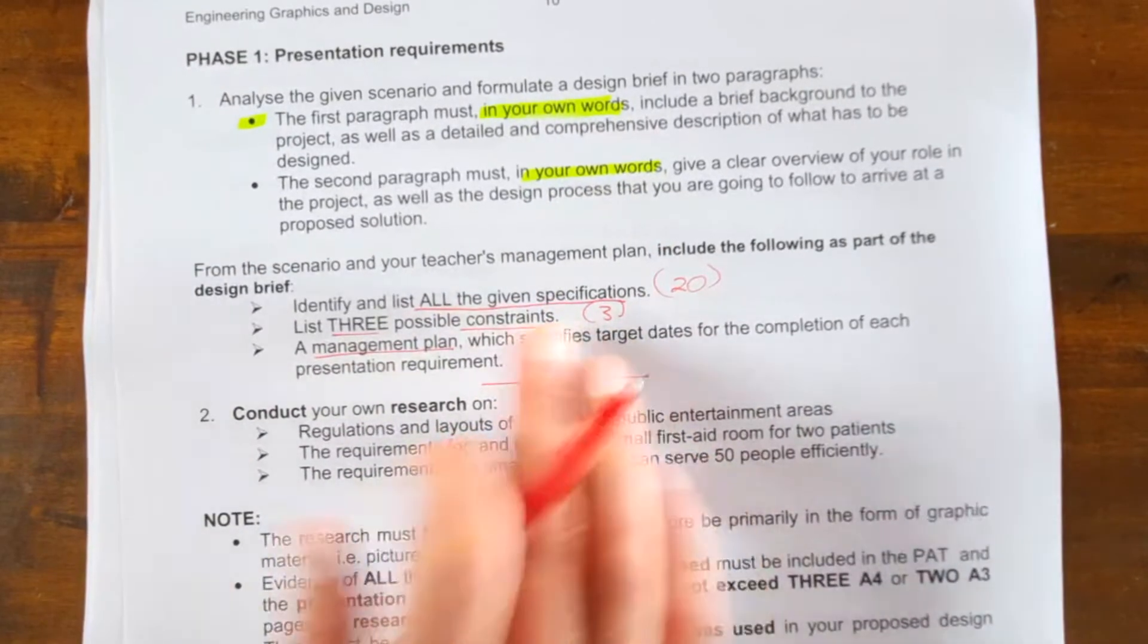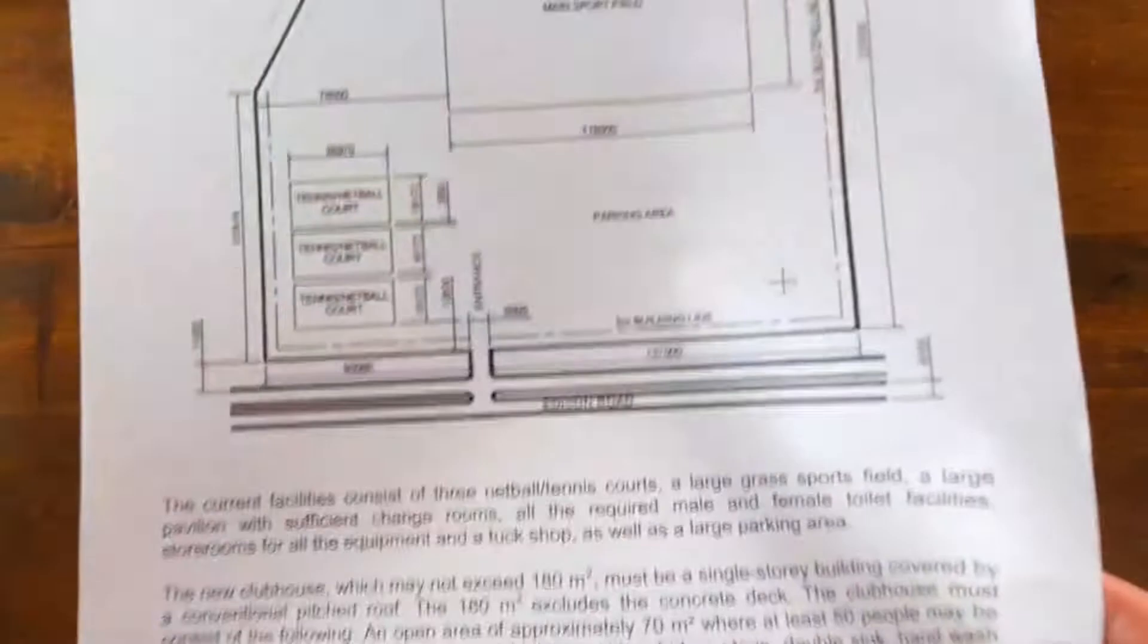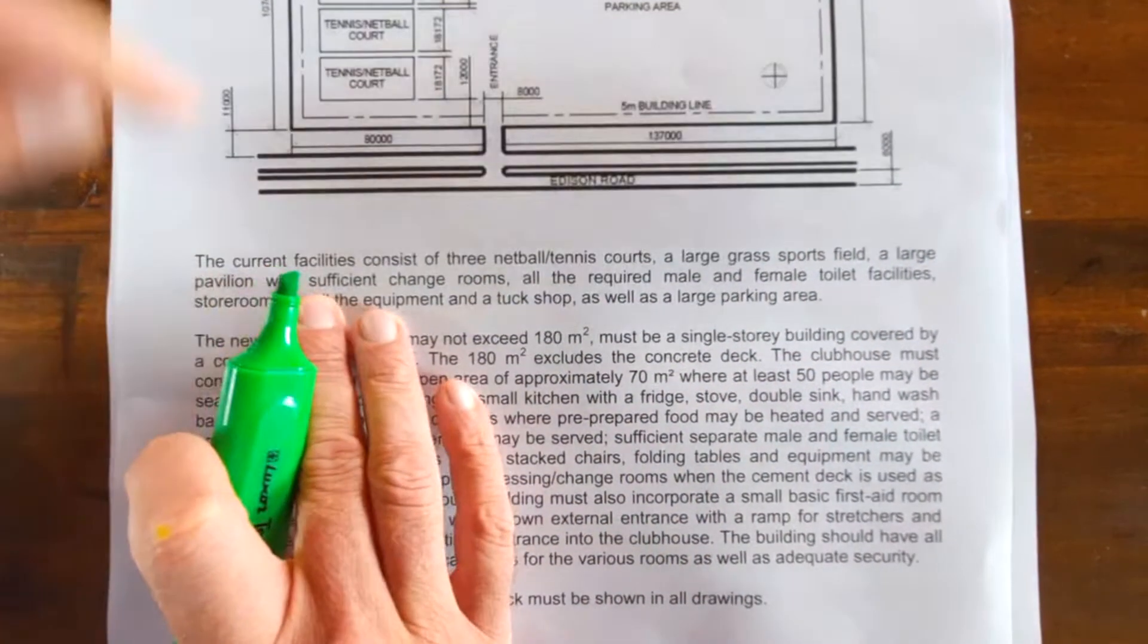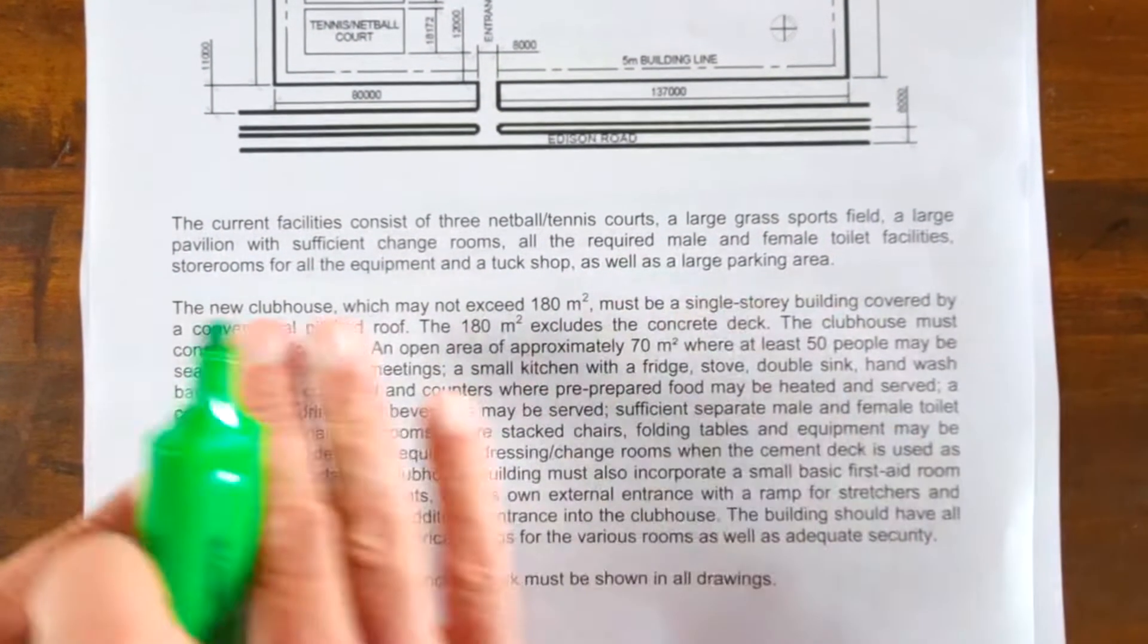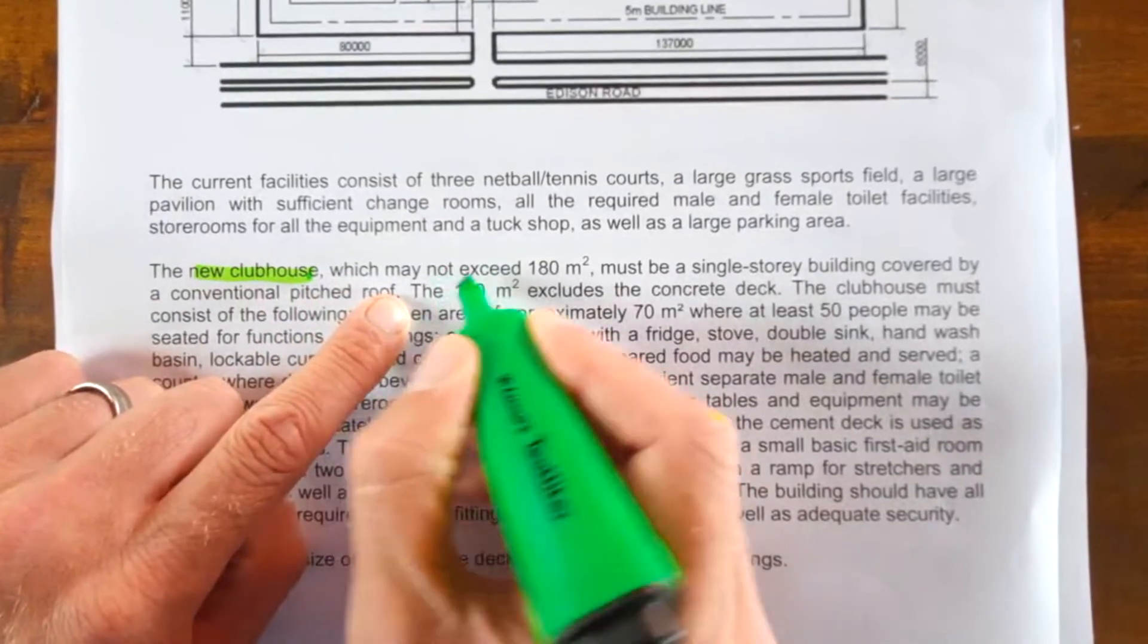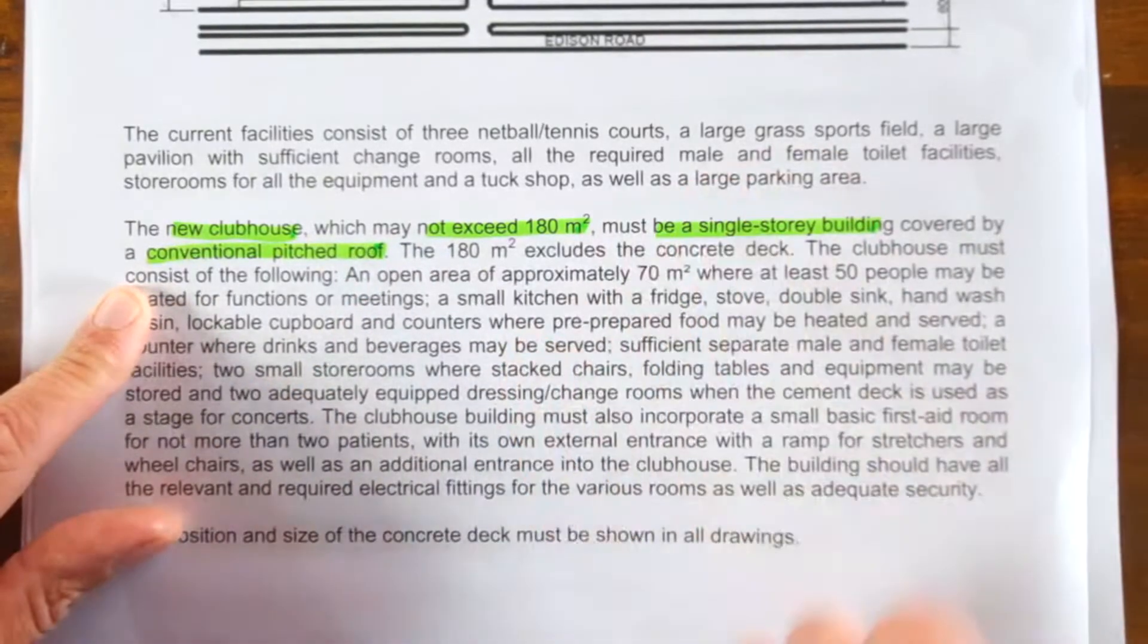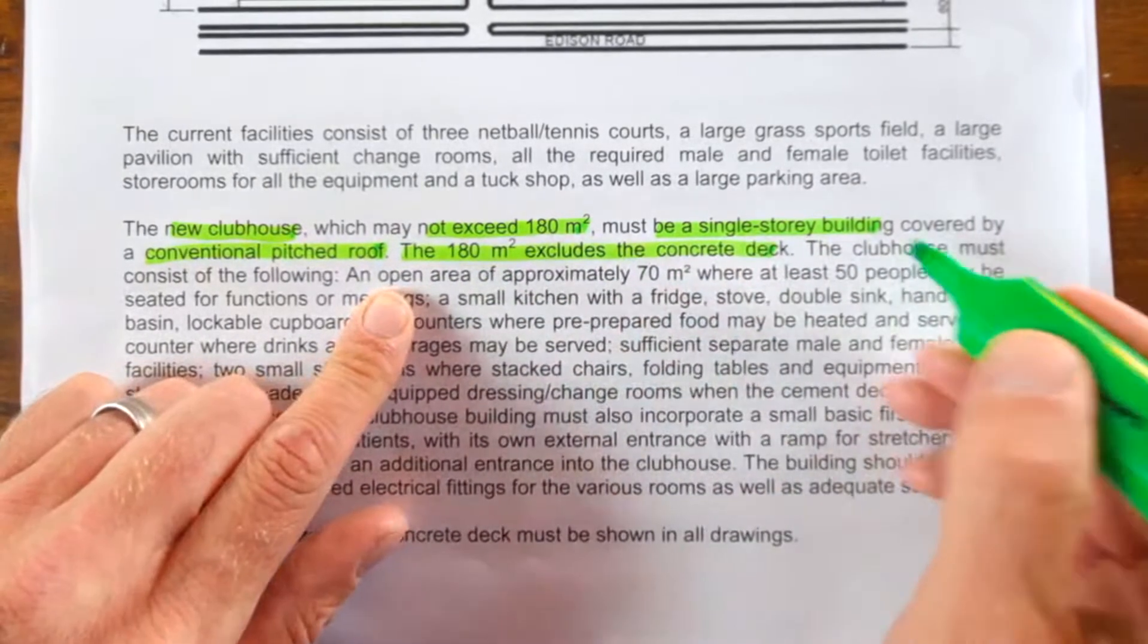So for you to get your specifications, you're going to go back to this document and now we are going to really dive deep into this. You're going to take your second page here. I'm going to use my green, and let's look at the first paragraph. It says current facilities: netball courts, lush grass, sports field, pavilion, etc. Now the new clubhouse. So you can highlight: the new clubhouse must have what? Must not exceed 180 square meters—first specification. Must be single-story building—second specification. Covered by conventional pitch roof—third specification. The 180 square meters excludes the concrete deck—another specification.